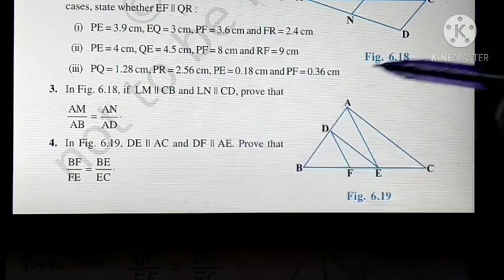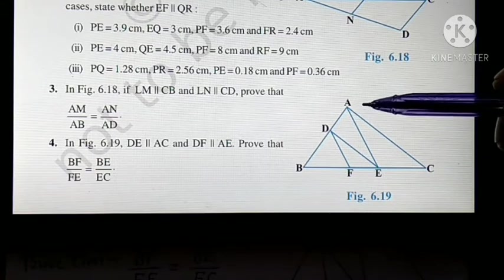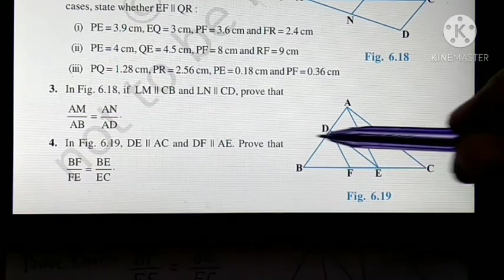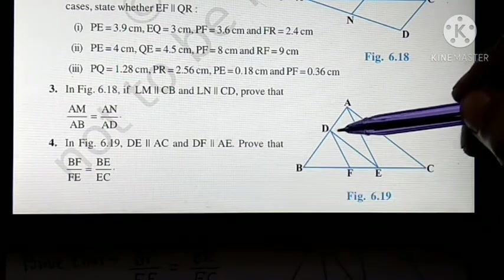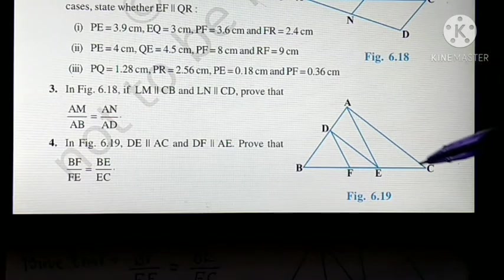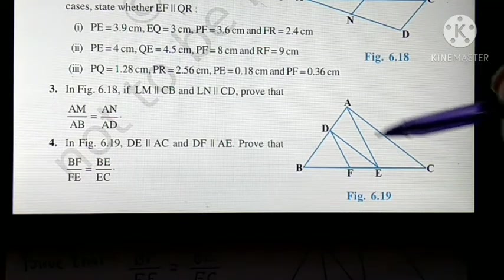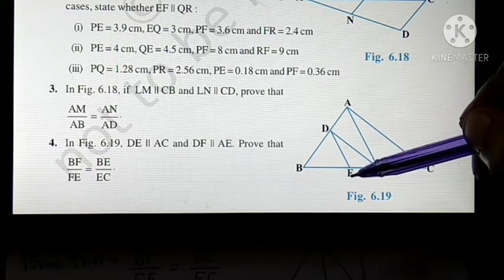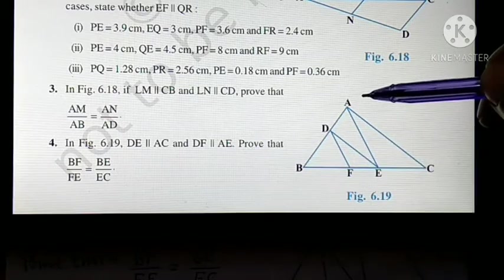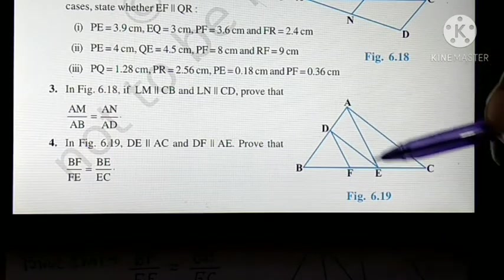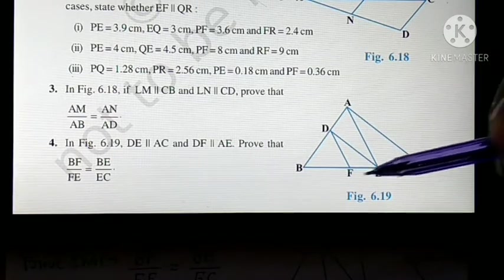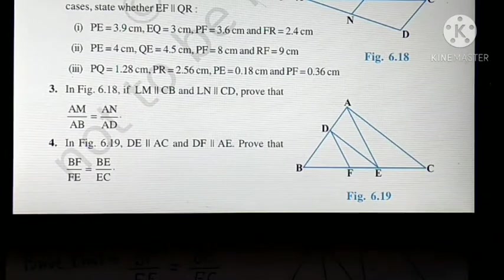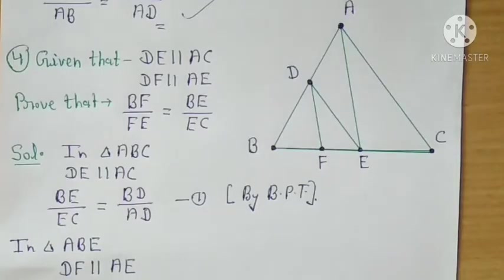In question 4, this triangle is given. Two types of lines are given: DE is parallel to AC, and DF is also drawn, which is parallel to AE. You have to prove the required result. The procedure is the same — first complete your steps: given that, prove that, and the diagram must be neat and clean.